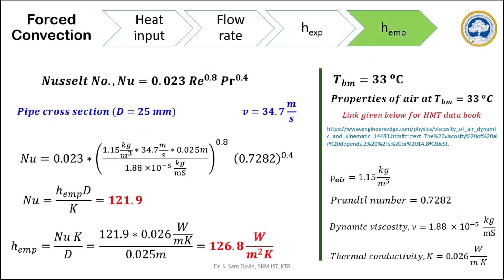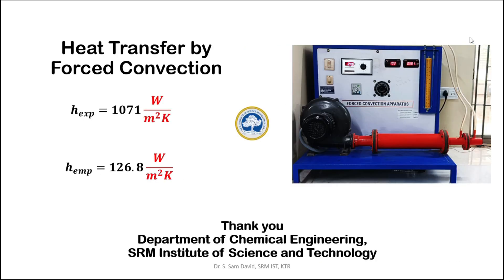The last step is to calculate the empirical heat transfer coefficient. For pipe flow, the Nusselt number is given by the Dittus-Boelter equation: Nu = 0.023 × Re^0.8 × Pr^0.4. Using the air properties already taken at the bulk mean temperature, we substitute directly to calculate the Reynolds number. The Nusselt number comes to be 121.9, which is rearranged to obtain the empirical heat transfer coefficient. That comes to be 126.8 W/m²·K, thus completing the calculation of both the experimental and empirical heat transfer coefficients.